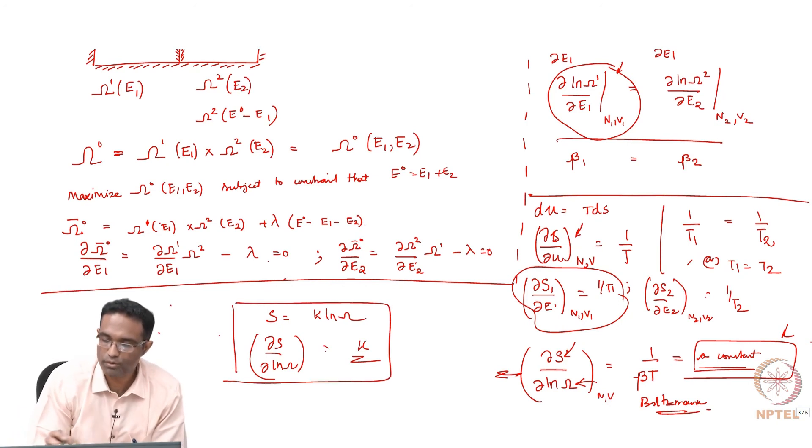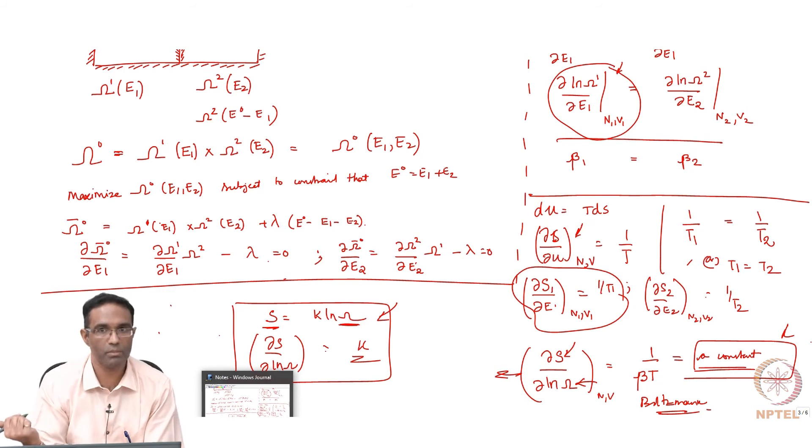Right now, if you see, we have an expression for the macroscopic thermodynamic quantity in terms of this number of complexions omega, which has got nothing to do with thermodynamics. It has total number of ways you can arrange something. So s is equal to k ln omega is one such statistical mechanical expression which connects the microscopic quantity to the macroscopic thermodynamic property of the system.